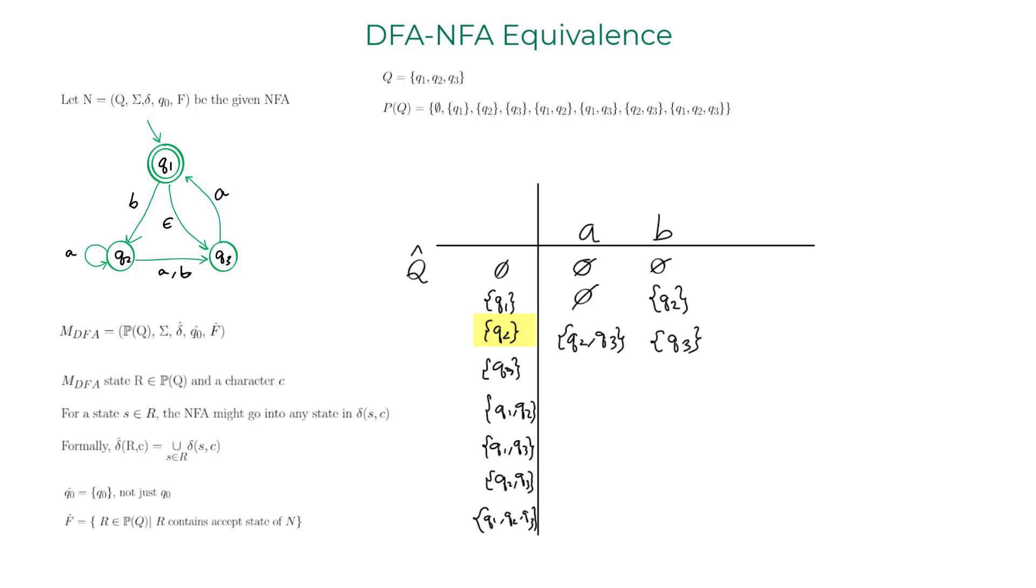Here is the interesting part about this DFA construction with epsilon transition. For Q3, when it transitions on character A, it makes the epsilon transition back to Q3. So we write Q1, Q3. For character B, it has no transition, so it is empty set.